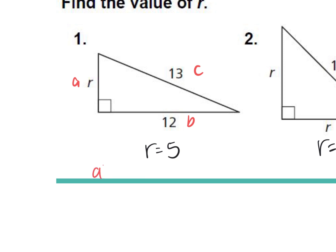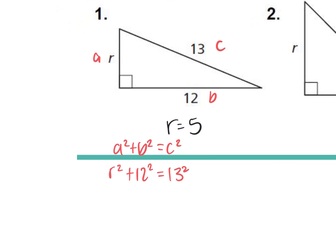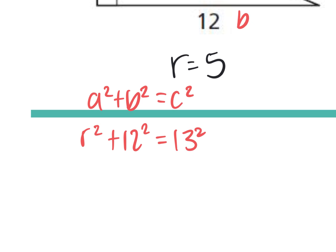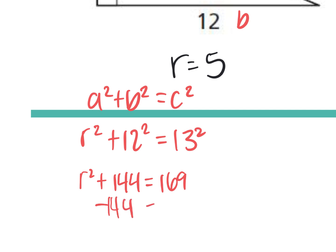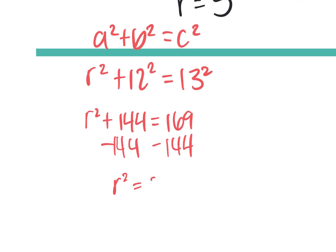So I did a² + b² = c², so r² + 12² with 13 squared. And then I squared it: r² + 144 = 169. Subtracted the 144, and I got r² = 25. Take the square root.